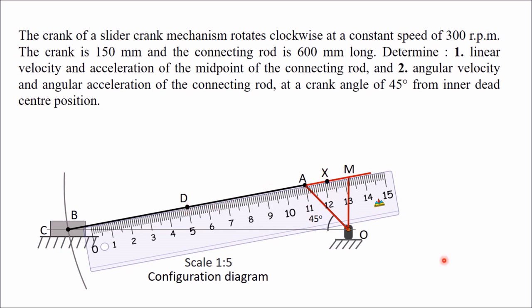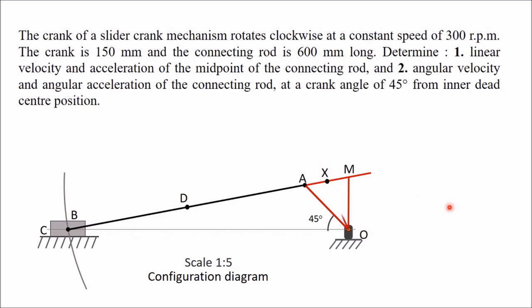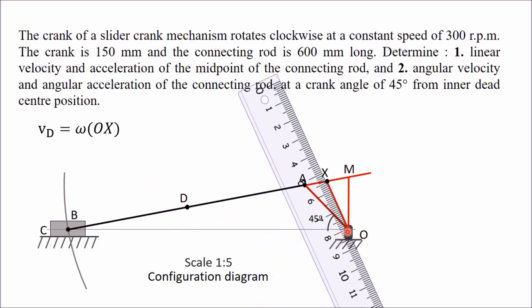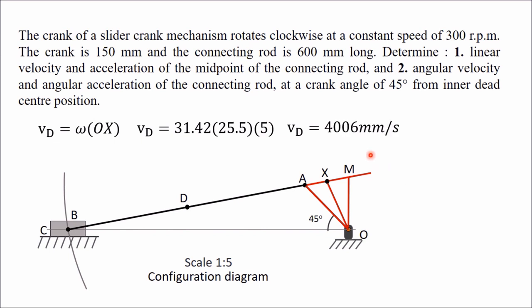X represents point D in the velocity diagram. Join O to X — this OX represents the absolute velocity of D. VD = ω × OX × scale = 31.42 × 25.5 × 5 = 4006 mm/s = 4.006 m/s.